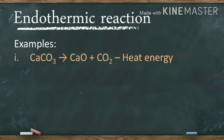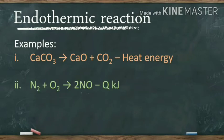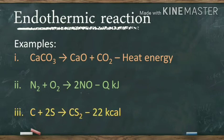For example, the decomposition of calcium carbonate to form calcium oxide and carbon dioxide is an endothermic reaction: CaCO3 → CaO + CO2 − heat energy. The formation of nitric oxide from nitrogen and oxygen is also endothermic: N2 + O2 → 2NO − Q kJ. When carbon reacts with sulfur to form carbon disulfide, 22 kcal of heat is absorbed: C + 2S → CS2 − 22 kcal.